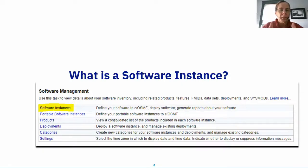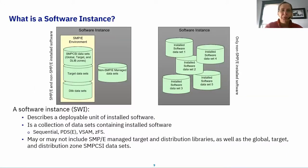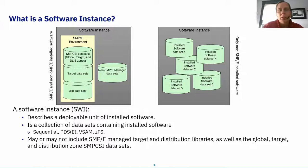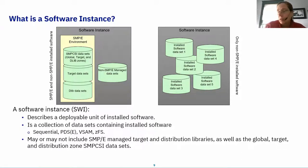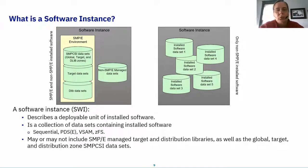Let's look at the very top item: a Software Instance. A Software Instance is the most basic building block of the installation strategy. It can be either SMP/E-installed products or non-SMP/E-installed products — it really doesn't matter. It is simply a collection of datasets that you can find. They have to have a name, you have to tell the system where they are, and you give that collection a title. So a Software Instance is really just pointing to some datasets, grouping them together, and giving that group a name.